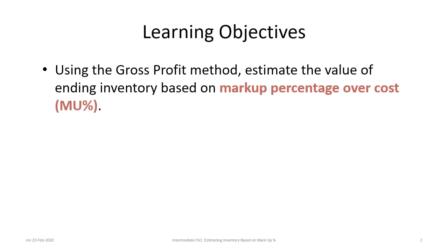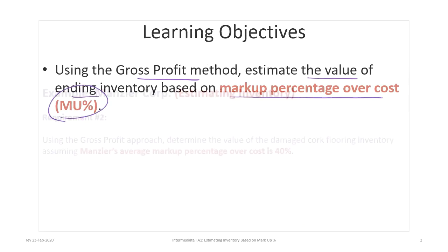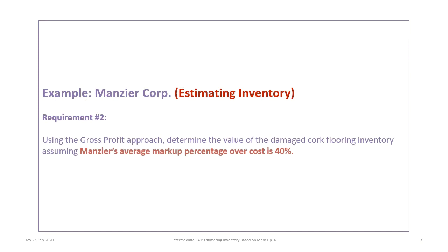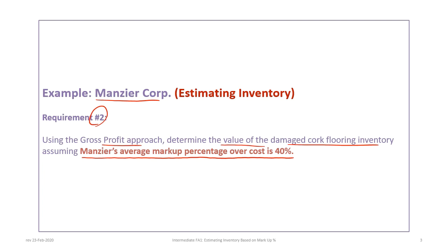Our learning objective here is, again using the gross profit method, to estimate the value of ending inventory using the markup percentage over cost, or MU percentage. This tutorial is still based on the Manzier Corp example, emphasizing requirement 2 — using the gross profit approach to determine the value of the damaged corp flooring inventory — this time assuming Manzier's average markup percentage over cost is 40%.